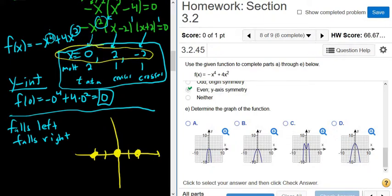So it falls left and falls right. We know that. So it has to come from underneath like this. And at negative two, it crosses. So it has to cross. So it crosses. Then it comes back down. Then at zero, it touches and turns around. Boom. And then at two, it crosses. Boom. So it looks something like that.